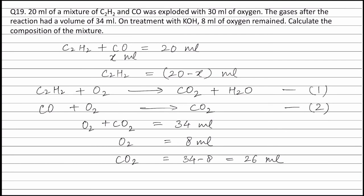Under similar conditions of temperature and pressure, relative volumes represent relative number of moles. Applying the principle of atom conservation on carbon atoms in equation 1, we get: 2 × moles of C2H2, that is (20 - X), equals 1 × moles of carbon dioxide.